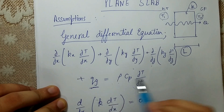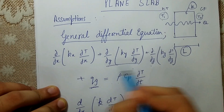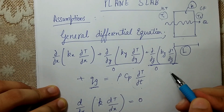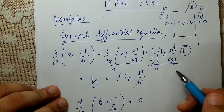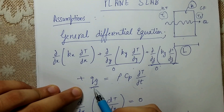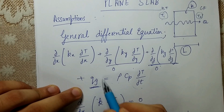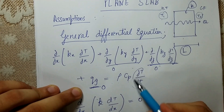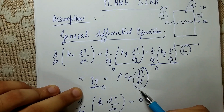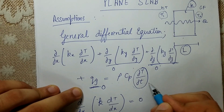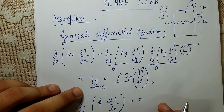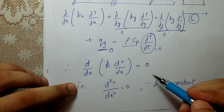Since it is one-dimensional, the y and z direction terms are taken as zero — there are no temperature variations in those directions. Since there is no internal heat generation, q_g is also zero. Since it is steady state, the right-hand side (∂T/∂t) is zero as well. What we are left with is (d/dx)(K · dT/dx) = 0.